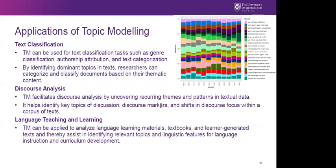Topic modeling can be used for text classification, such as genre classification, authorship attribution, and text categorization. If you have many essays but don't know what they're about, you can use topic modeling to assign them to topics A, B, or C, which helps add metadata information to corpora — for example, labeling subcorpora as being about education, migration, or crime.